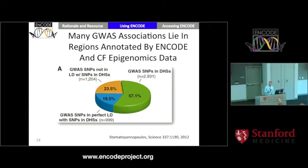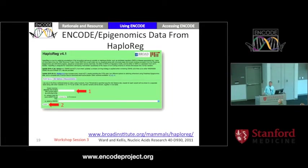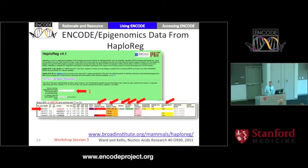A recently published study looked at ENCODE and Common Fund Roadmap Epigenomics data and found that many GWAS findings overlap with these annotations. If one is not familiar with these kinds of assays, the simplest way to get started is through pre-computed resources. First, I'll tell you about HaploReg from Manolis Kellis' group at MIT, which can help you sort through ENCODE and Roadmap data. With HaploReg, you put in genomic coordinates or SNP IDs and click submit, and it will return pre-computed analysis of ENCODE data — showing you, for both the lead SNP and others in LD, what kinds of ENCODE and Roadmap annotations are found in that area to help guide further experiments.